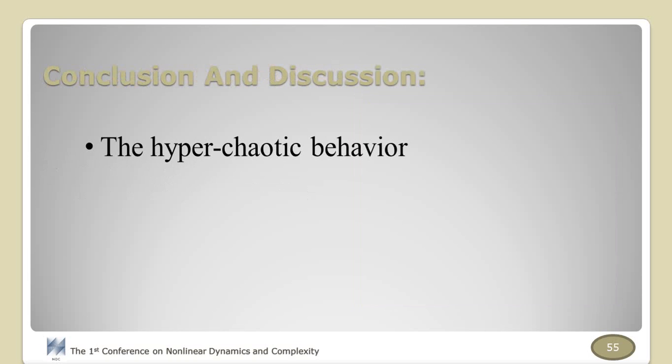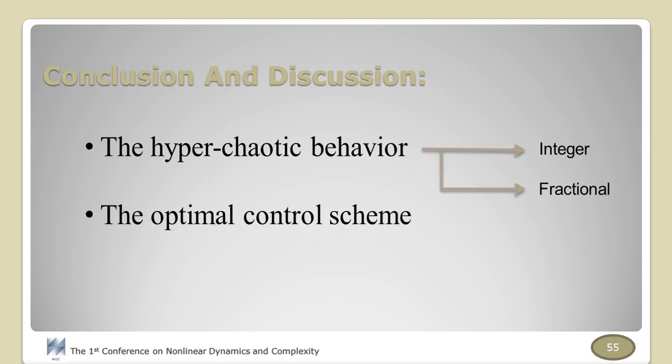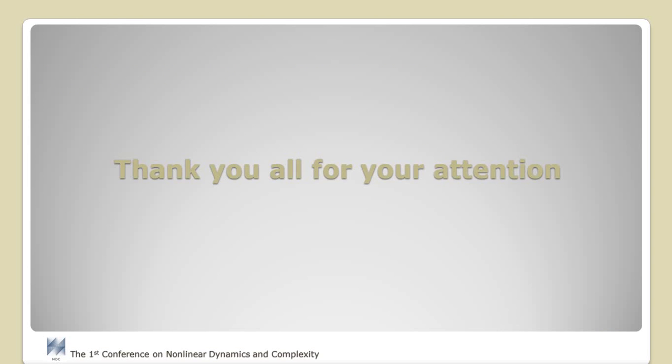In this work, the hyperchaotic behaviors of a non-autonomous cardiac oscillator were investigated in both frames of integer and fractional, and an optimal control strategy is applied to both models using Pontryagin's principles of optimality. Then an active control and adaptive control have been used to synchronize two identical systems. As we saw, the application of fractional calculus in this work presented a more realistic and flexible performance to design well-organized control strategies, as fractional order models can describe memory effects which are essential features of many biological processes. Thank you all for your attention.